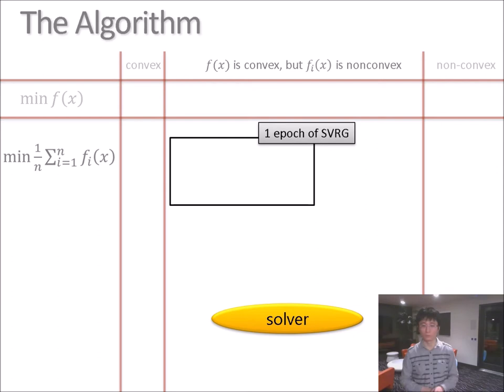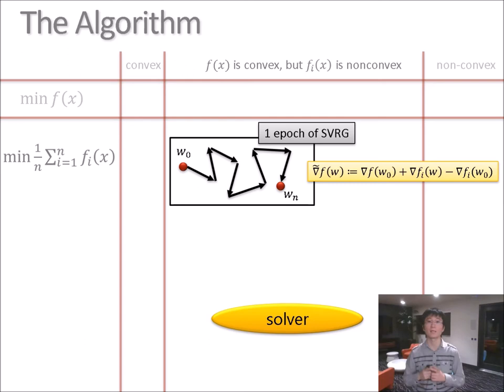So this turns out to be possible, and is precisely what this paper tackles. Here is a full description of how the algorithm works. First remember how the so-called SVRG method works, stochastic variance reduced gradient method. In each epoch of SVRG, it starts from a point W_0 and applies some stochastic scheme for n iterations. And in each iteration, it goes in the direction of the so-called gradient estimator.